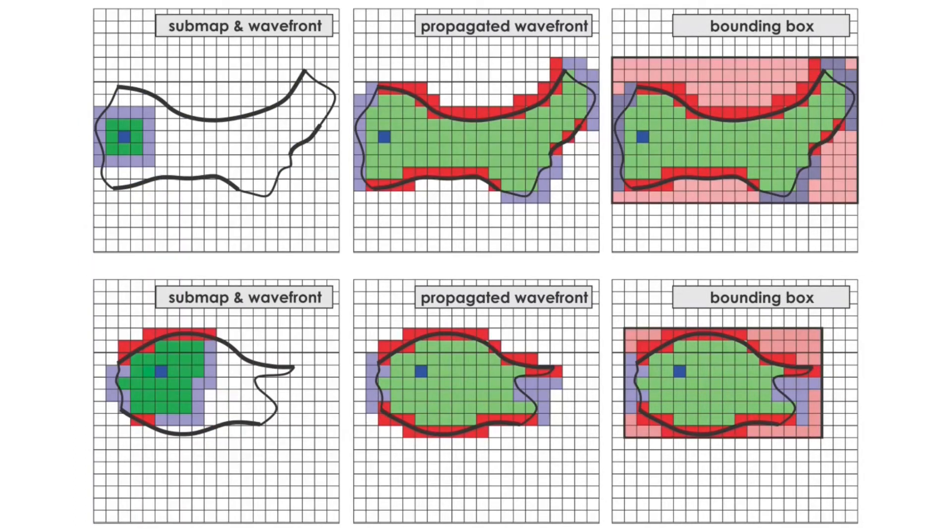Furthermore, a bounding box around the current submap is calculated using the endpoints of the wavefront propagator. This bounding box is used in the next steps of the algorithm to provide the limits for sampling towards traversable points within the volume in a collision-free manner.